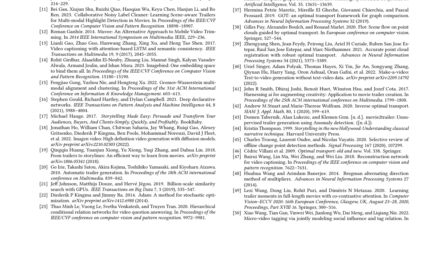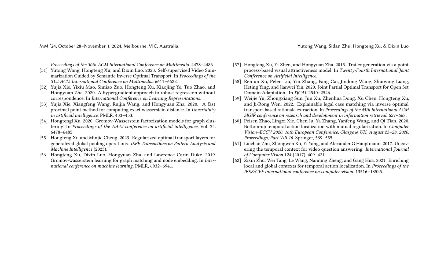The paper discusses various techniques for video summarization, including attention-based models and graph-based methods. The authors highlight the challenges of trailer generation, such as the need to balance visual and audio features and the importance of considering the narrative structure of the movie. The proposed framework consists of three main components: music feature extraction, video feature extraction, and inverse partial optimal transport-based alignment, with mathematical formulations provided for each. The paper concludes by highlighting potential applications including trailer generation for movies and TV shows and music recommendation systems.